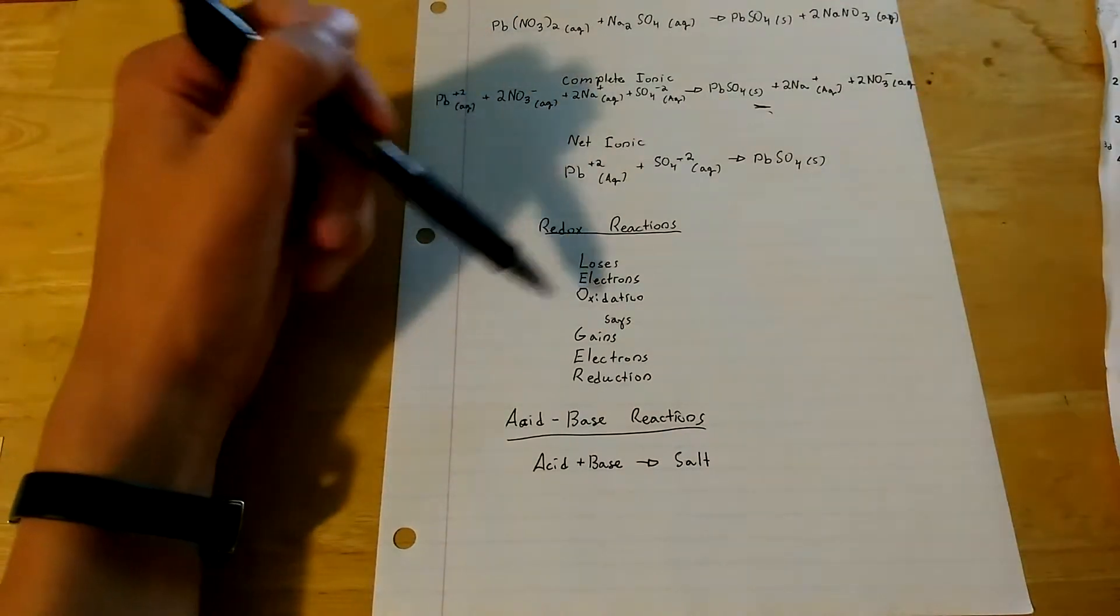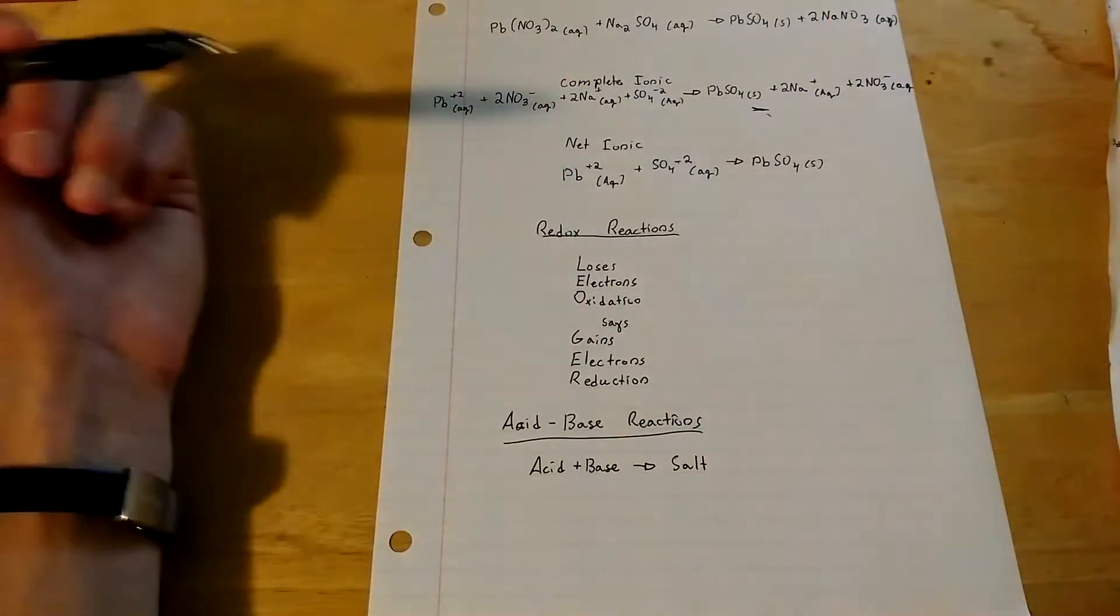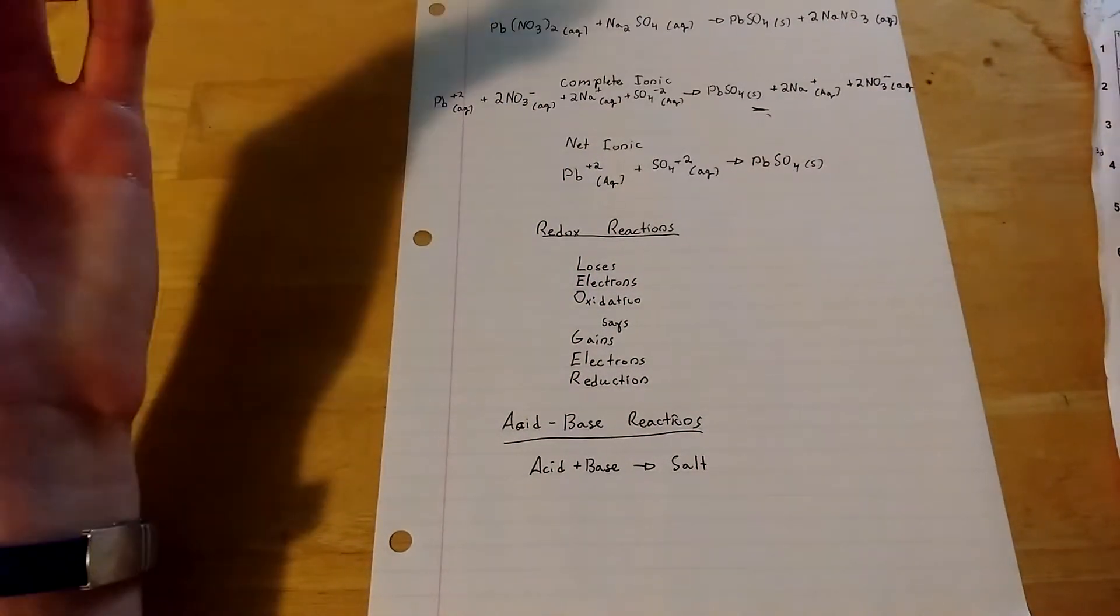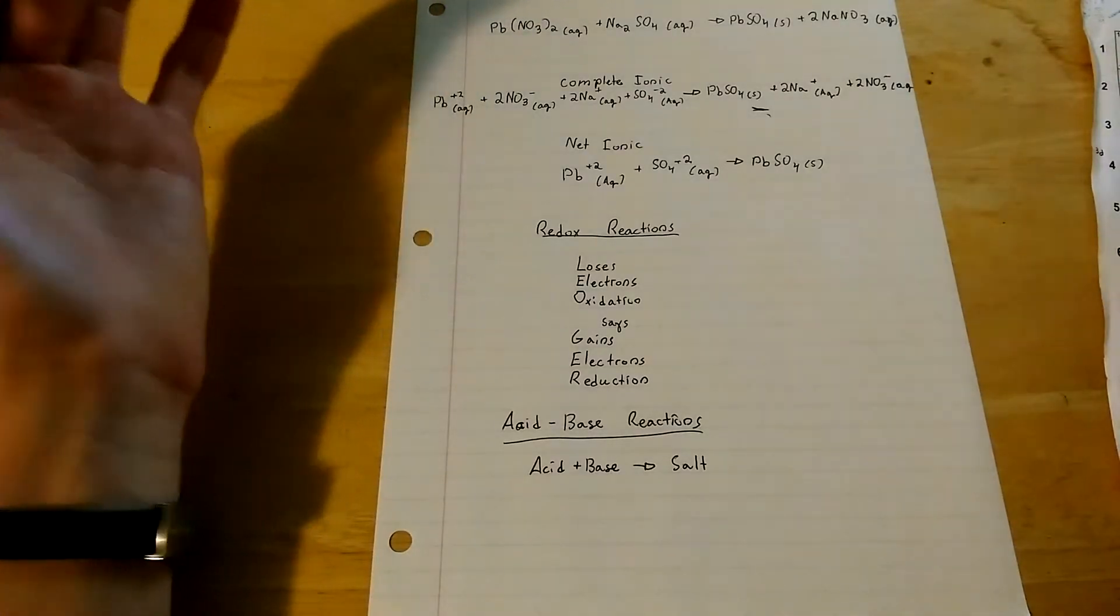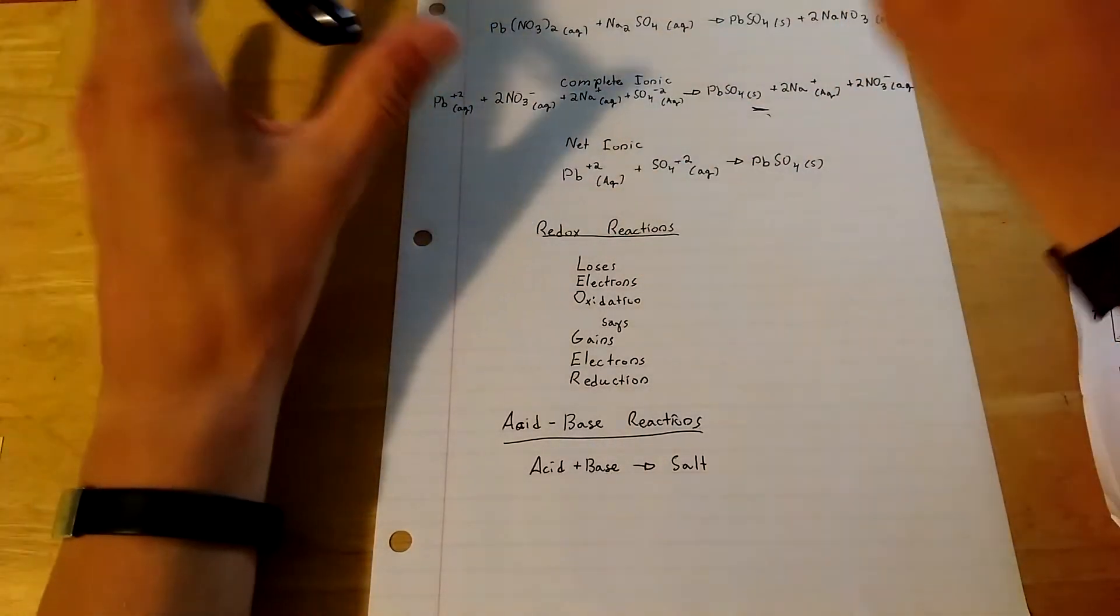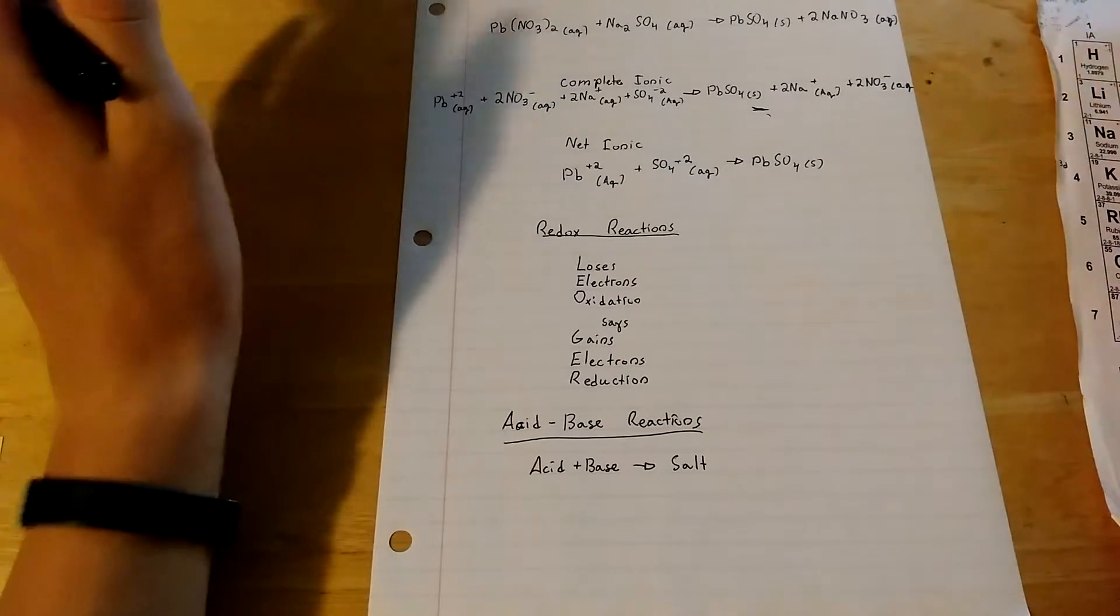For redox reactions, you just have to remember Leo says ger, or loses electrons oxidation, gains electrons reduction.